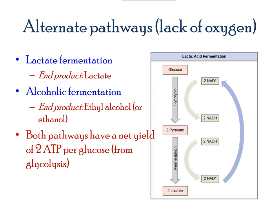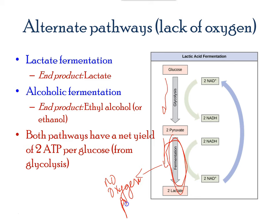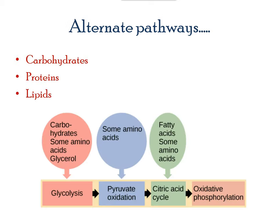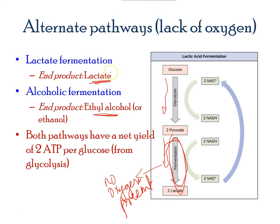In the absence of oxygen, the glucose molecule has a different fate. Since the Krebs cycle and electron transport chain require oxygen, when no oxygen is present, pyruvate — the end product of glycolysis — forms lactic acid in muscle cells and alcoholic end products in bacterial cells. When you exercise and feel a lump in your muscle, this is due to lactic acid accumulation, because you don't breathe long enough to provide oxygen to those muscle cells.